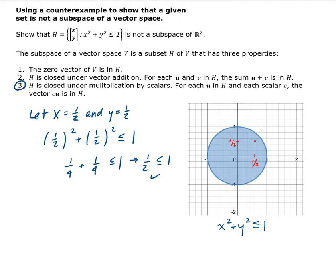So what we can do is, now using property three, we can pick, remember, that property three has to be true for any C value, for any value of C. So let's let C be equal to four. So if we take the scalar and multiply it by the vector one half, one half, then we end up getting two, two.